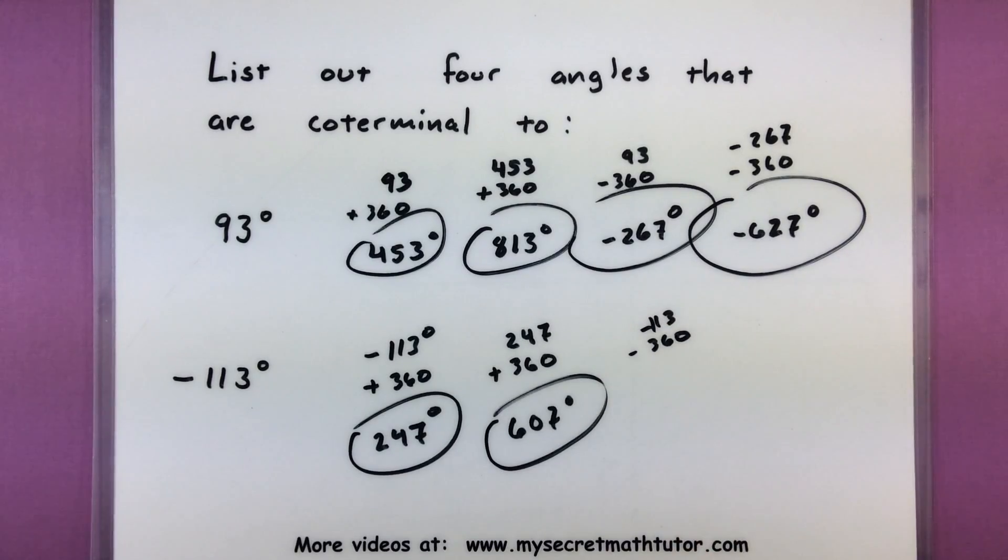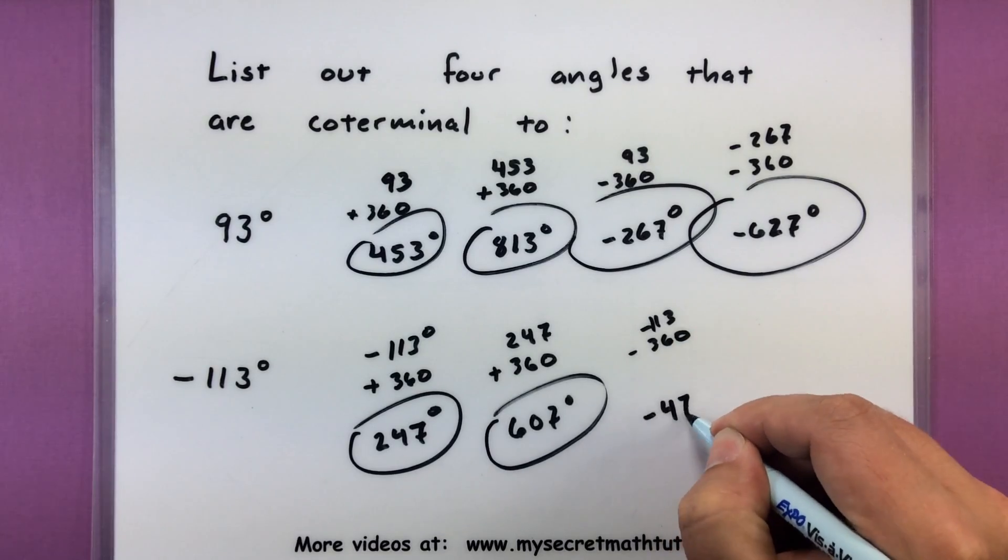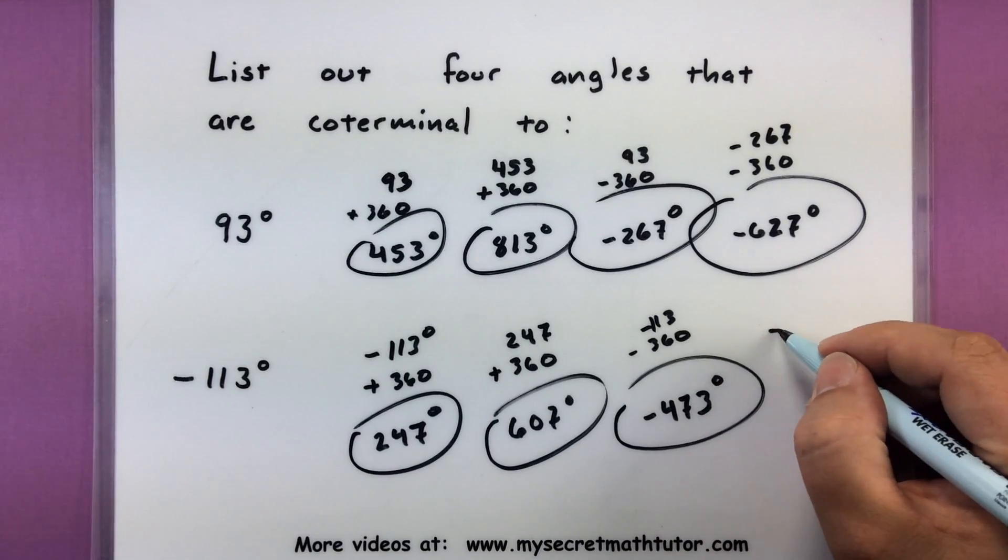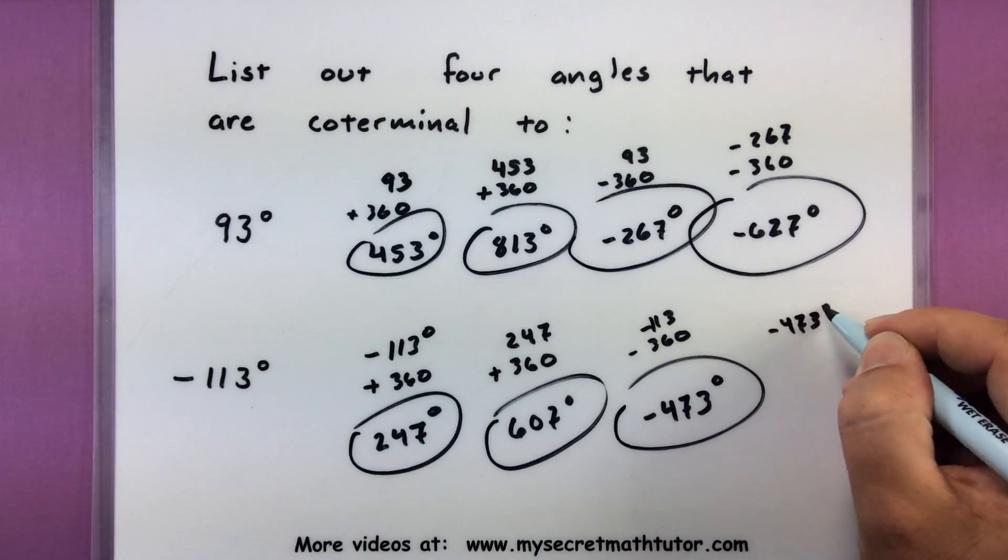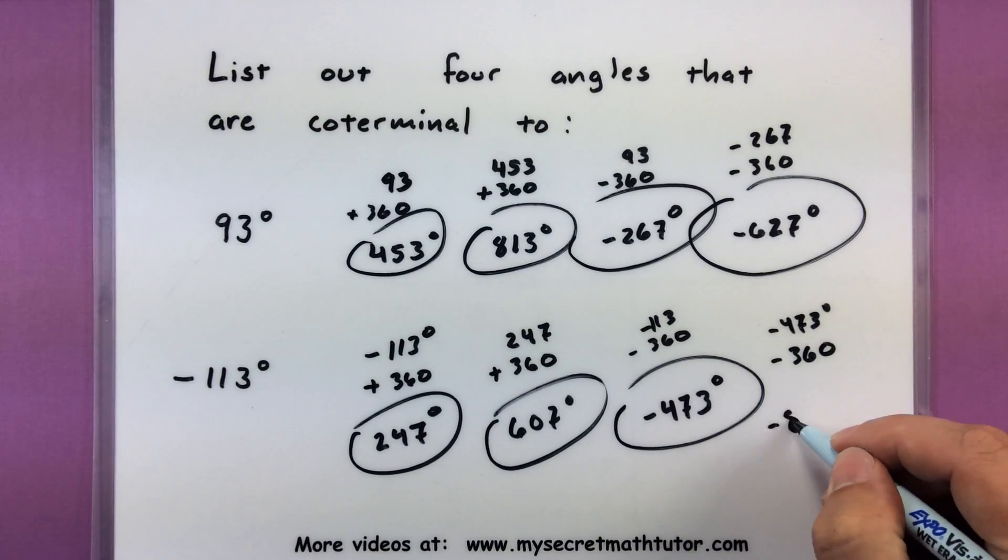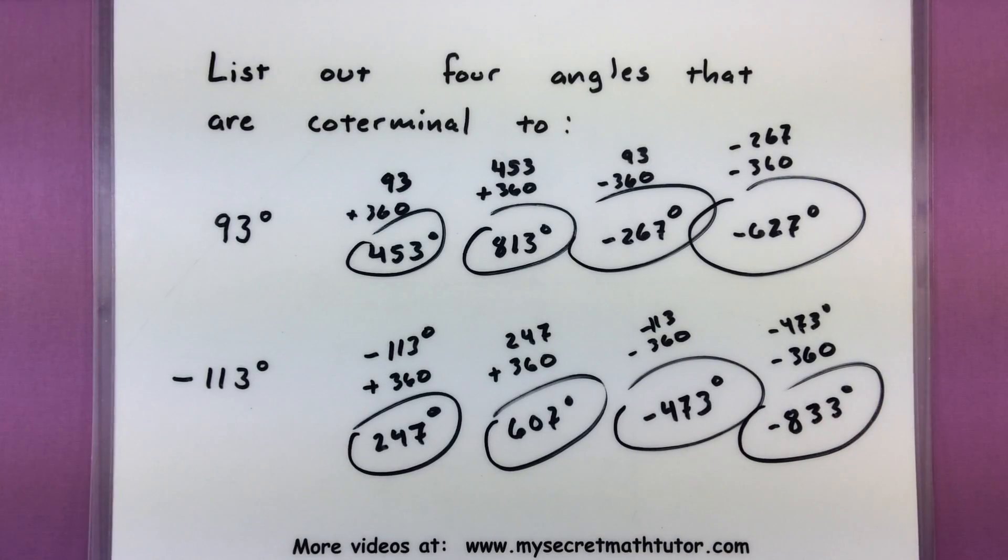So for this I'll go ahead and subtract 360, not too bad. This just turns out to be negative 473, so there's one. And let's take this angle, subtract another 360 degrees, to get one more coterminal angle, negative 833 degrees, there we go.